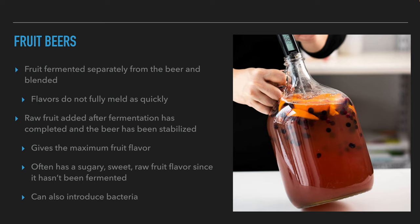Another method is to ferment the fruit separately from the beer and blend them at the end, though the downside is the time needed for flavors to come together — this is called the marriage phase. Brewers can also add fruit after fermentation has finished and the beer is stabilized, maximizing the fruit flavor. However, this can add a sugary, sweet, or raw fruit flavor since it has not undergone fermentation, and bacteria can arrive with the fruit, contaminate the beer, and create off flavors from the fruit sugars.